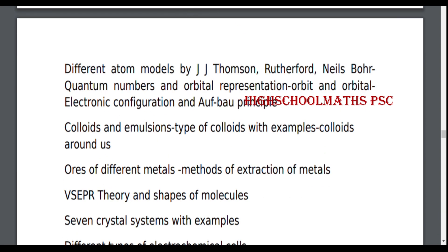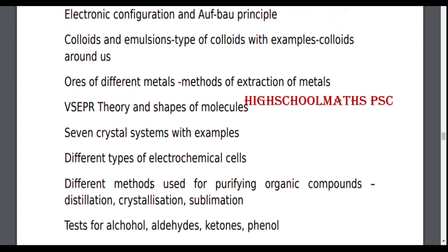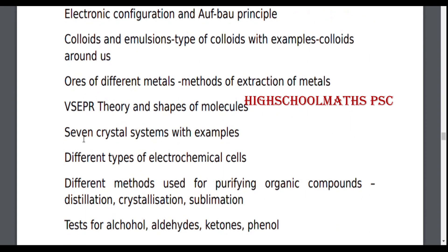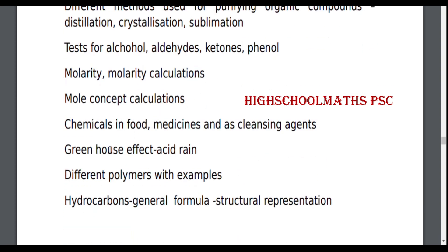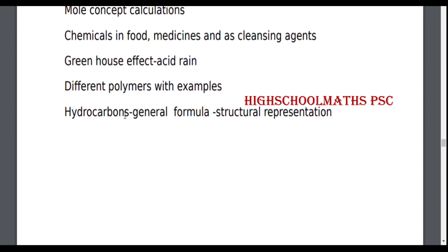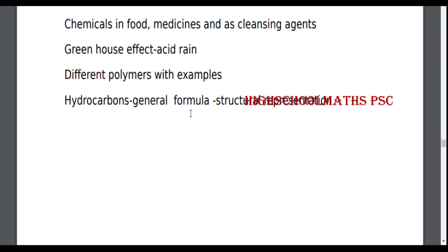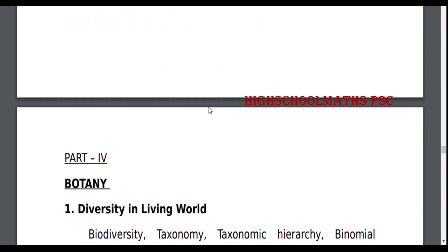Ores of Different Metals, Methods of Extraction of Metals. VSEPR Theory and Shapes of Molecules. Seven Crystal Systems and Examples. Different Types of Electrochemical Cells. Different Methods used for Purifying Organic Compounds: Distillation, Crystallization, Sublimation. Test for Alcohol, Aldehydes, Ketone, Phenol. Molarity and Molarity Calculations. Mole Concepts and Calculations. Chemicals in Food, Medicines and Cleansing Agents. Greenhouse Effect, Acid Rain. Different Polymers with Examples. Hydrocarbons — General Formula and their Structural Representation.